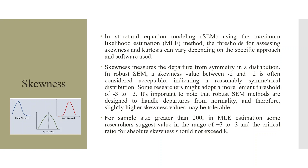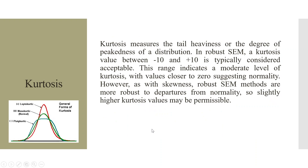For sample sizes greater than 200 in MLE estimation, some researchers suggest values in the range of plus 3 to minus 3, and the critical value for absolute skewness should not exceed 8. Kurtosis measures the tail heaviness or degree of peakedness of a distribution. In robust SEM, a kurtosis value between minus 10 and plus 10 is typically considered acceptable, with values closer to zero suggesting normality. Robust SEM methods are more robust to departures from normality, so slightly higher kurtosis values may be permissible.